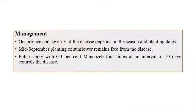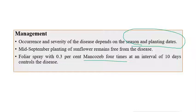Regarding management, the occurrence and severity of the disease depends on the season and planting dates. Mid-September planting of sunflower remains free from the disease, so adjusting planting dates is advisable. Foliar spray of 0.3% Mancozeb, four times at intervals of 10 days, can effectively control this disease.